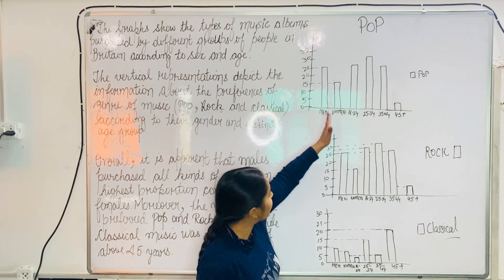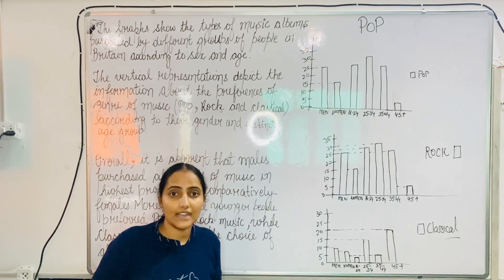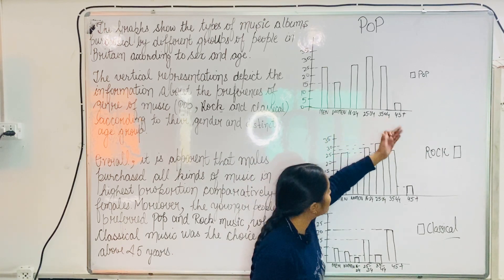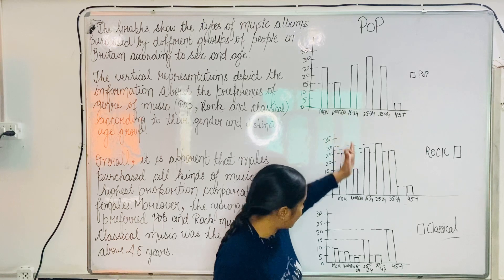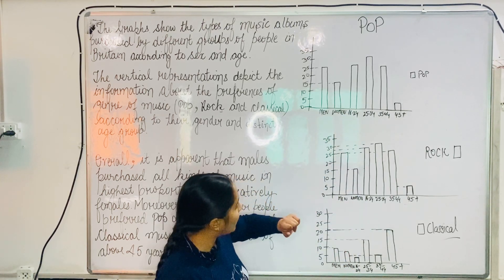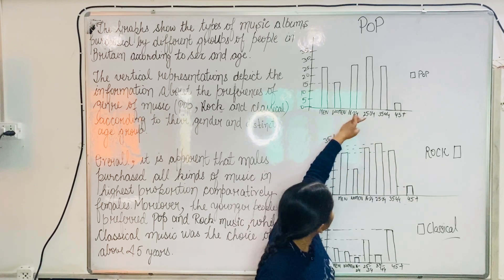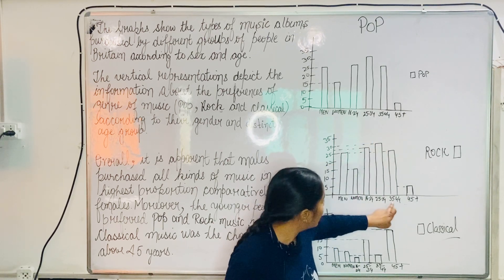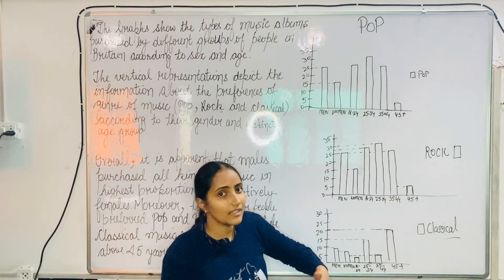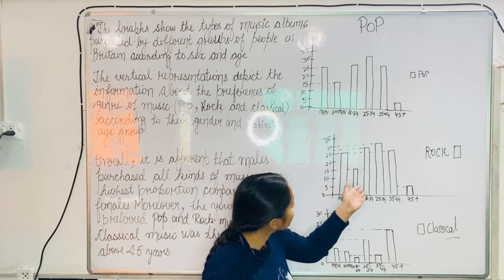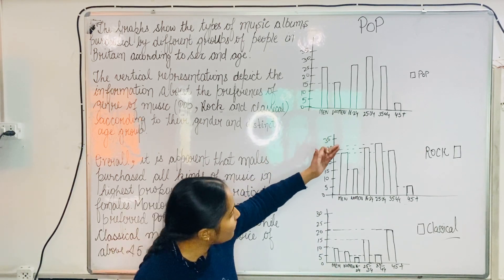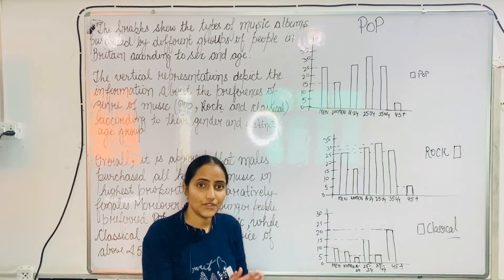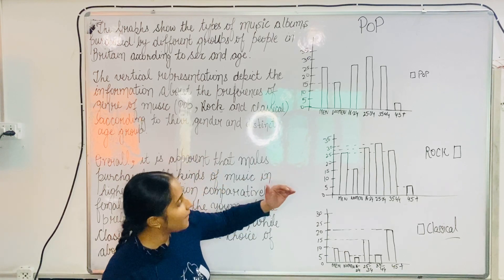In the second body paragraph, let us move towards the age groups. Having a glance at the rest of the data, it is clear that the three age groups — 25 to 34, 35 to 44, and 45 plus — showed the same figures for both pop and rock music, meaning they preferred homogeneously. They showed homogeneous figures for both pop and rock music.